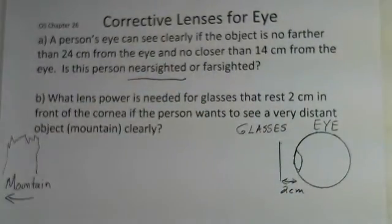This distance is close to the eye, 24 centimeters being the limit. So what lens power do we have to provide to this person in glasses, not contact lens? This is related to chapter 26 of OpenStax College Physics. The lenses are going to be 2 centimeters away from the cornea and we want this person to see a mountain clearly. How would we calculate the power of these lenses?